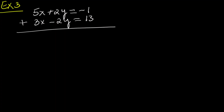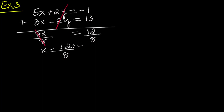Let's add the equations. 2y and negative 2y cancel out. 5x plus 3x is 8x. Negative 1 plus 13 is 12. So we now have 8x equals 12. Divide both sides by 8: x equals 12 over 8. Simplify by dividing top and bottom by 4: x equals 3 over 2.